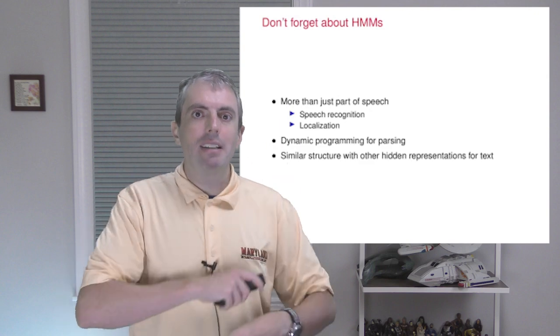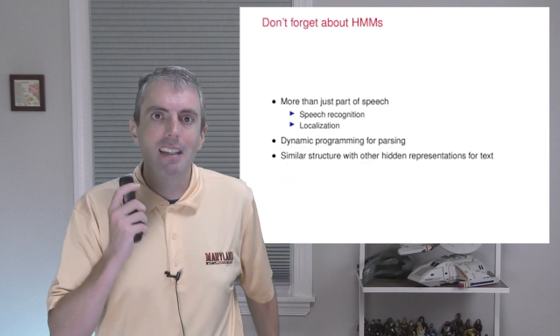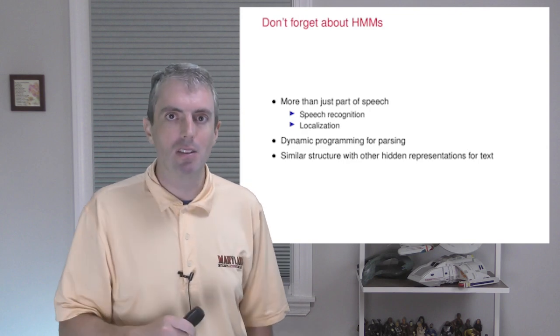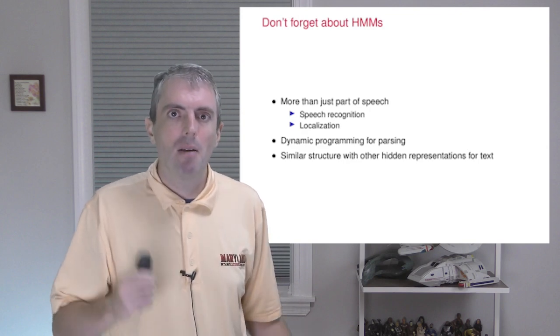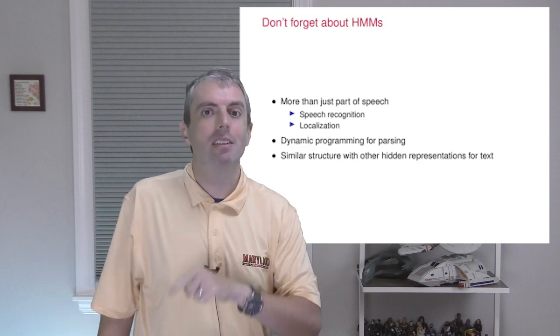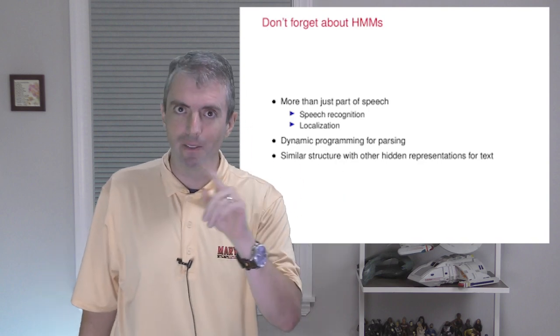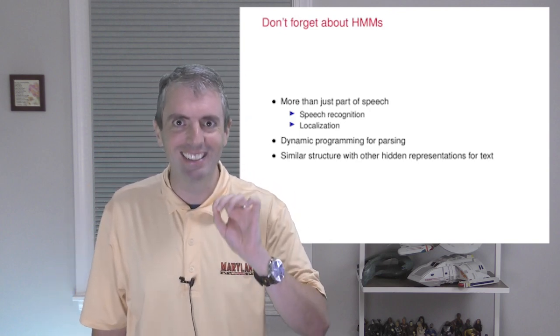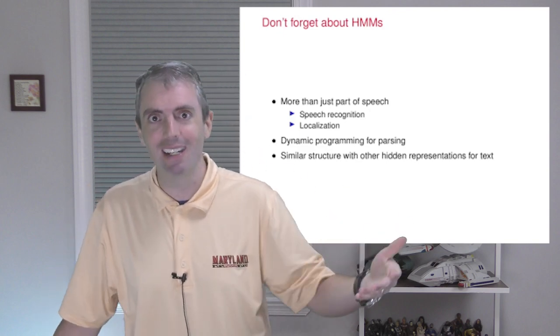So that's it, now you know how to take a bunch of part-of-speech annotated data, estimate a hidden Markov model from that, and then use that data to find parts of speech for new text. But the ideas are more fundamental than that, so even though this is the end of our discussion of hidden Markov models, don't forget about them. Hidden Markov models are central to more applications, such as speech recognition or tracking objects.